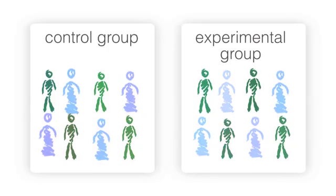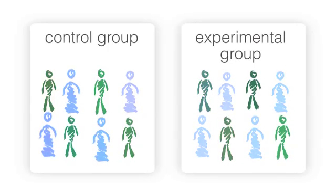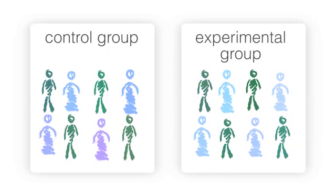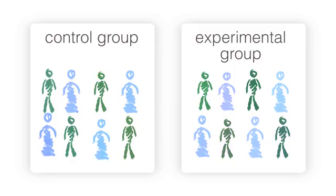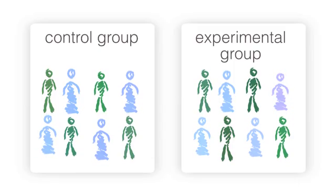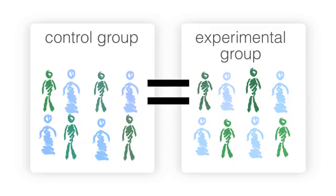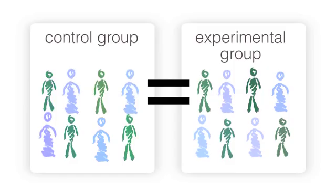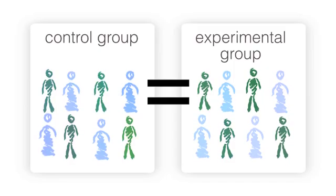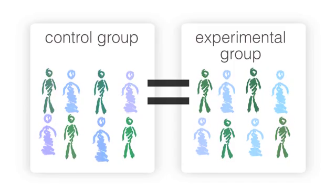Since everyone in the study will experience different natural changes, researchers can measure the changes in each person, add them together, and find the average change for each group. If the average change in all the groups is the same, then the changes in any one person — whether for better or worse — are probably due to natural variation and not whatever is being researched.